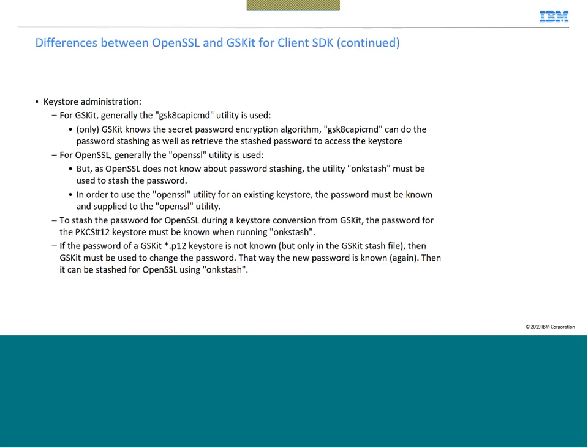This is a tricky point. If you do not remember your GSKit password which is stored in the stash file, then you may not be able to convert it to OpenSSL. To enable that, you need to first change the password for the GSKit keystore and use the new password when providing it to onkstash.